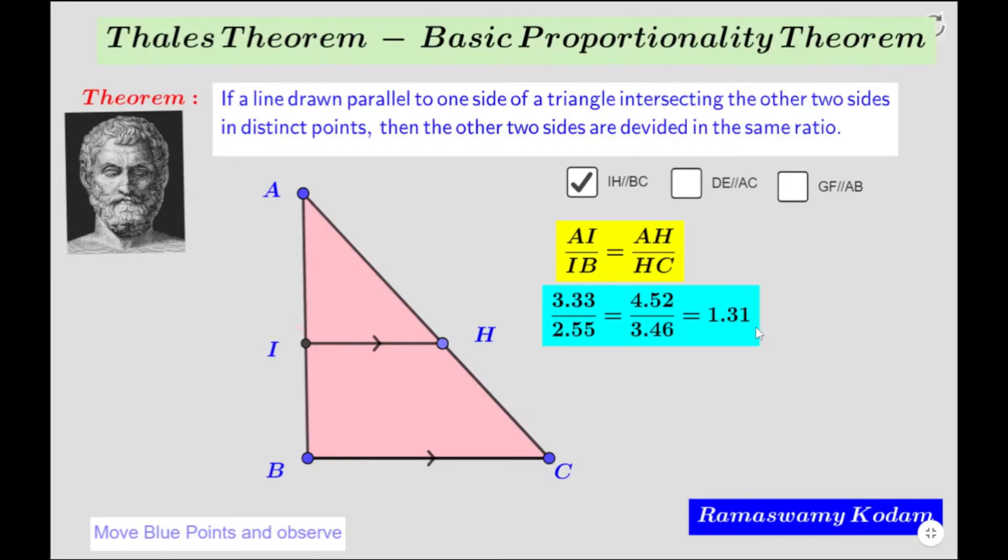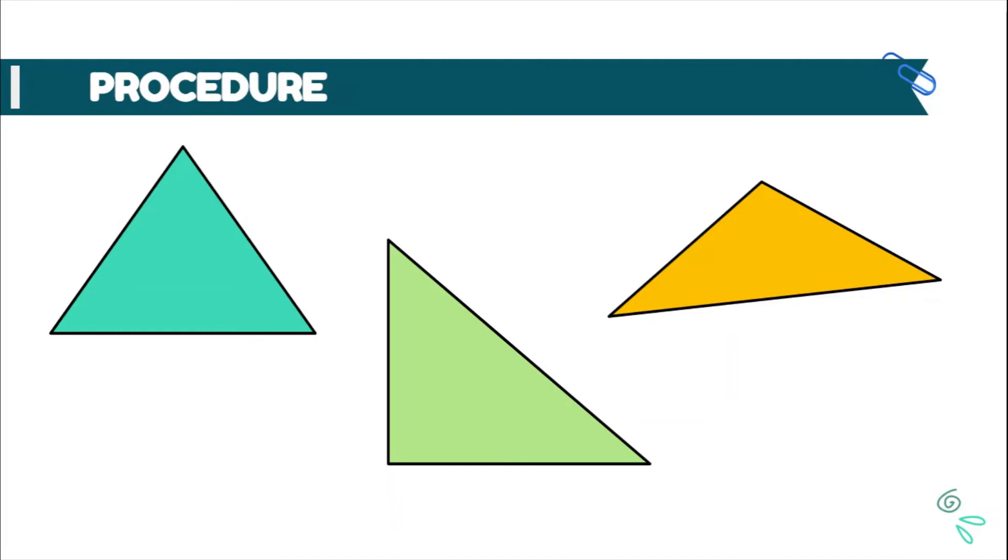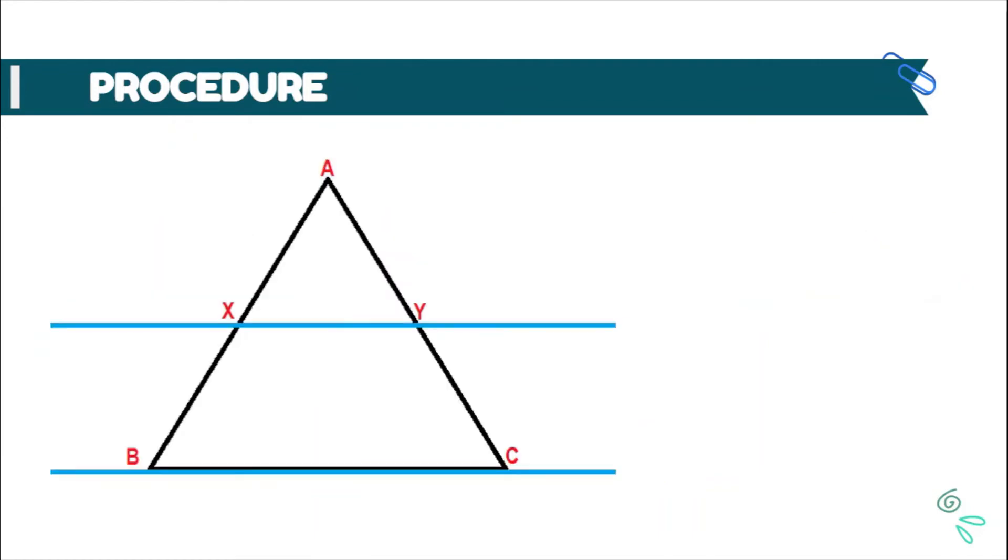Now, let us move on to the procedure of this activity. Cut three different triangles from different color paper and name them as triangle ABC, triangle PQR and triangle DEF. After cutting these three triangles, you are supposed to paste them on your practical notebook. After pasting them, you are supposed to draw parallel lines. You can draw two parallel lines as shown here in blue color or you can draw just one line parallel to the base of the triangle.